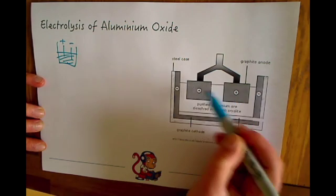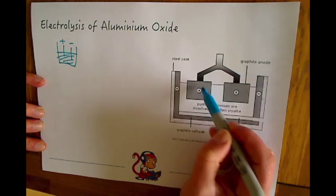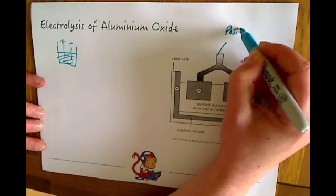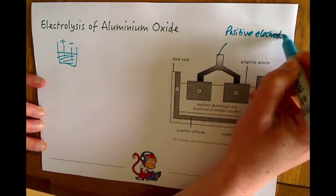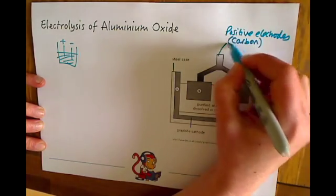First of all, the two electrodes sticking in the top are actually both positive. If you look at the pluses here, they show you that both of those are positive electrodes, and importantly, they're normally made out of carbon—I'll come back to that later.